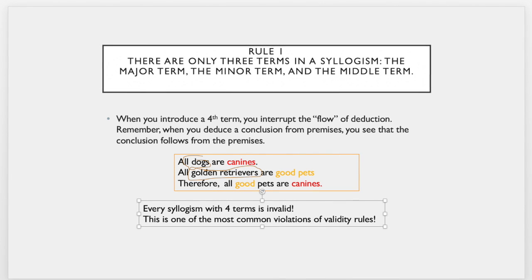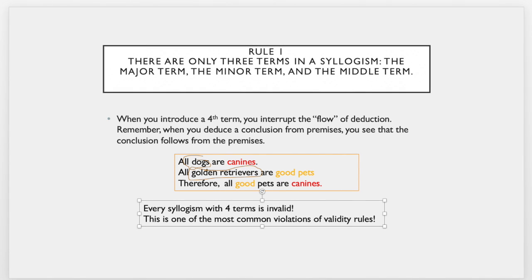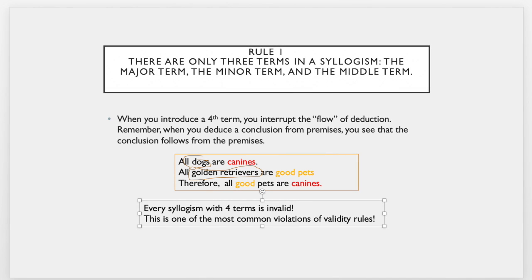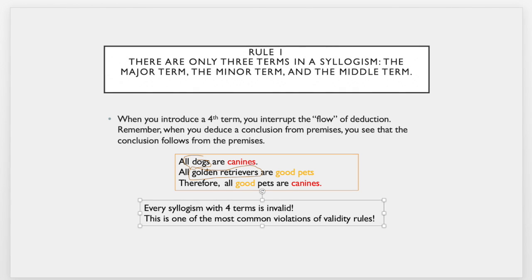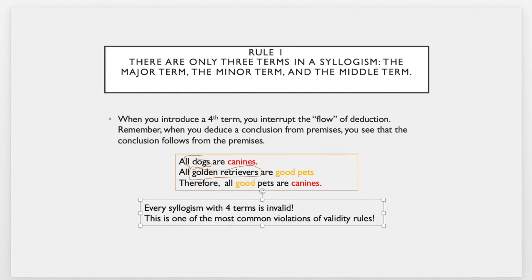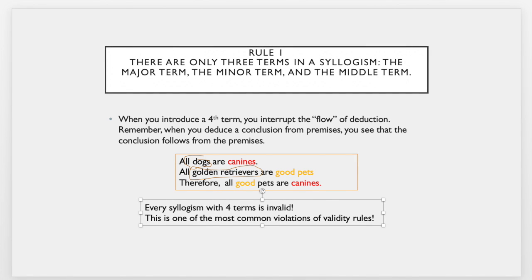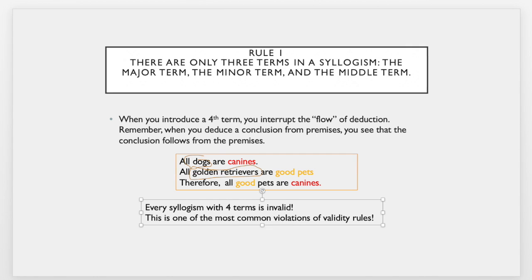Every syllogism with four terms is invalid. This is the most common violation of the rules of validity. So you might just want to pause this and go over and make sure you understand which are the major and which are the minor terms in this syllogism, and then see that there are actually two middle terms or two terms that are neither major nor minor in the premises.